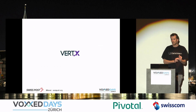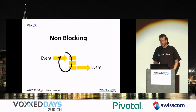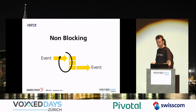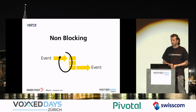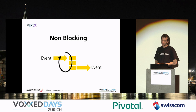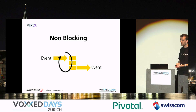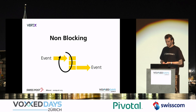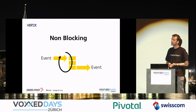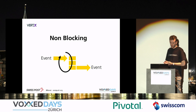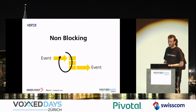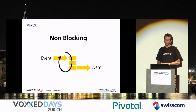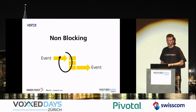So, Vert.x — why Vert.x? It is a reactive toolkit. It is a toolkit to build reactive applications on the JVM. And what is interesting with this kind of reactive toolkit, with these reactive technologies, is that they rely on non-blocking I/O most of the time, and you have fewer threads — you need fewer threads to process your data or your request events.